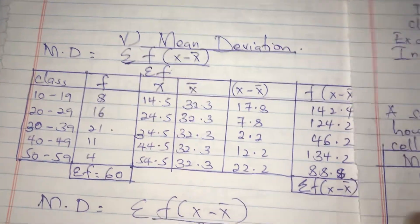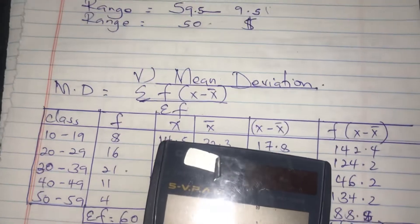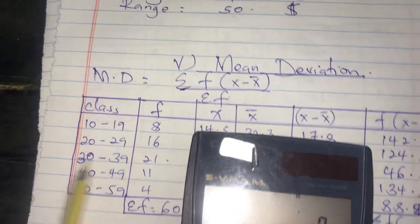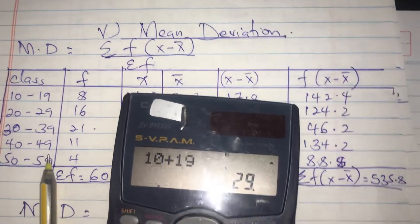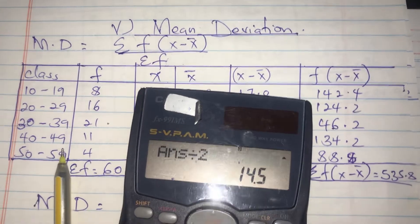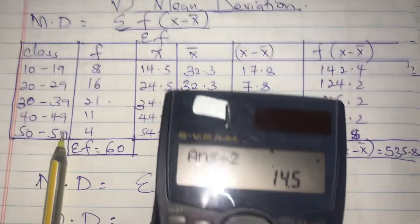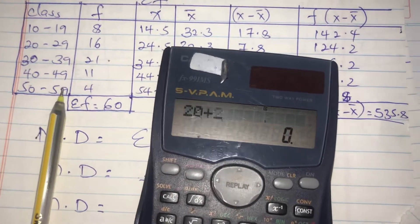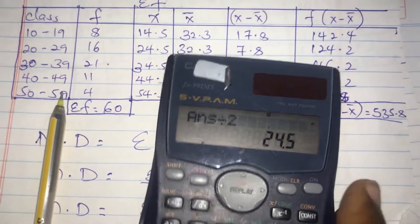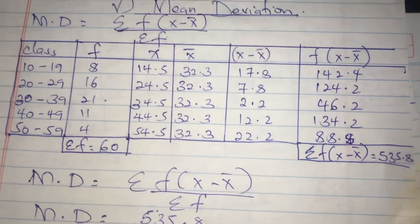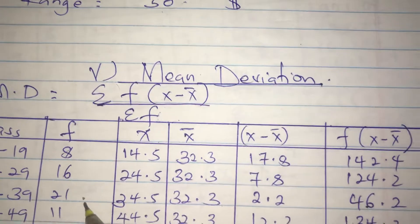For the column of x, we get the average (midpoint) of each class. So the first one is 10 plus 19 divided by 2, which is 14.5. The next one is 20 plus 29 divided by 2, which is 24.5. We do the same thing for the rest to complete the x column.